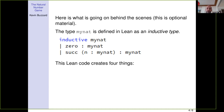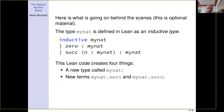Those are the only ways you can make natural numbers. When you type those inductive commands into Lean, four things are created: the natural numbers type itself (called mynat), two constructors — mynat.zero and mynat.succ (just called zero and succ in the Natural Number Game) — and a recursor. Zero is a constant that spits out a natural number; succ takes a natural number and produces another.